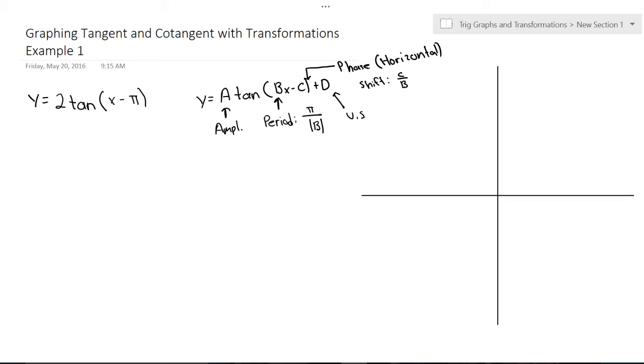So we have 2 tangent x minus pi. First thing I would do is write down all of our differences from our standard tangent graph. We've got an amplitude of 2 this time. And then we've also got our B value is still 1, so that means our period is still going to be pi, because it's going to be pi divided by absolute value of B, which is 1, which just equals pi.